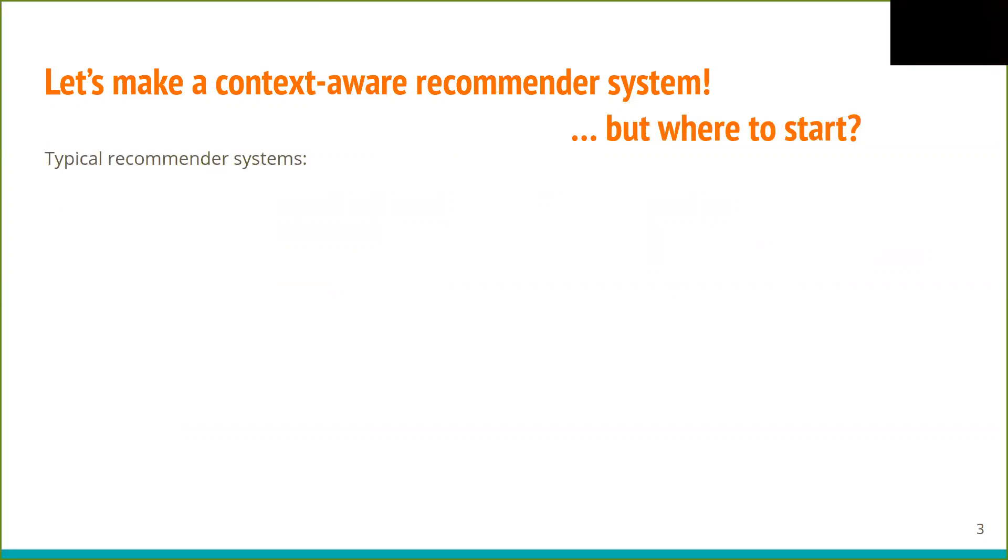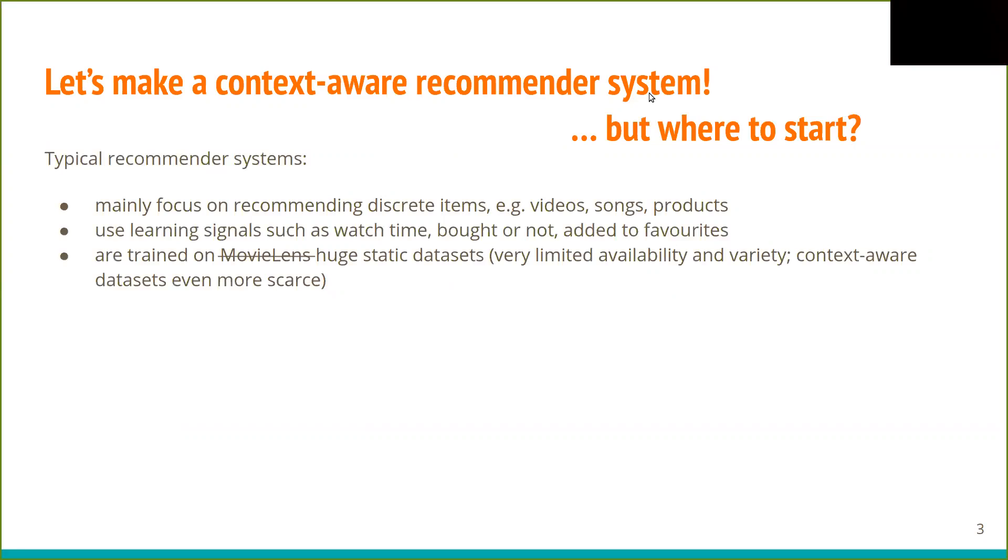Let's consider typical recommender systems. They mainly focus on recommending discrete items such as videos or songs. They use learning signals such as watch time or whether item was bought or not. They are trained on huge static data sets, which are in fact very limited and context-aware data sets are even more rare. And as the data sets are static, these systems can't really learn dynamic user behaviors.